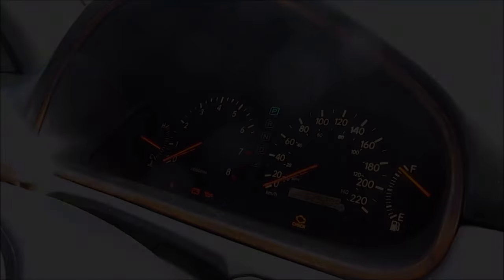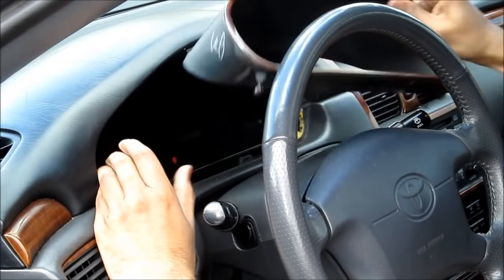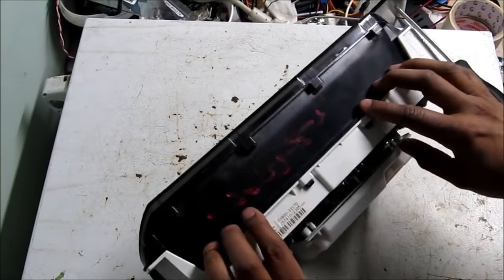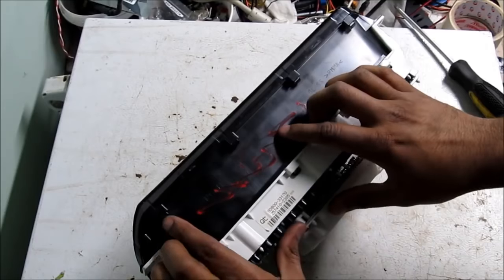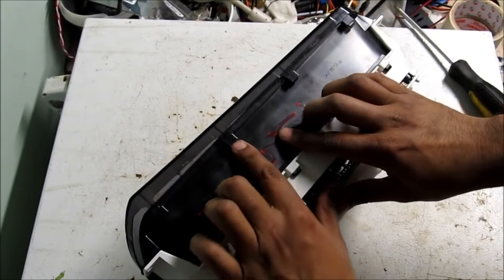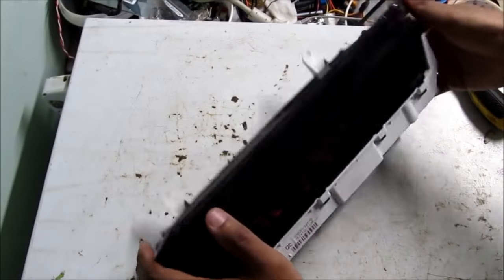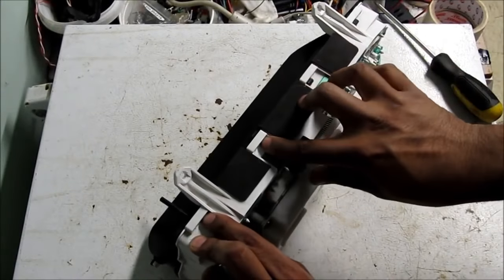I'm going to first start by removing the instrument cluster. So here's the cluster out of the car. We need to open this up to access the chip. I'm going to start by releasing these tabs here to take off the front cover. A couple more tabs at the top here to release.